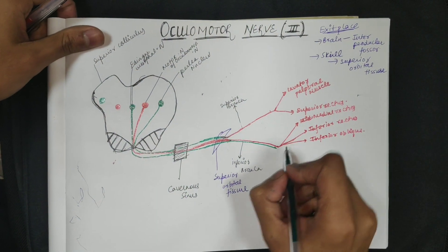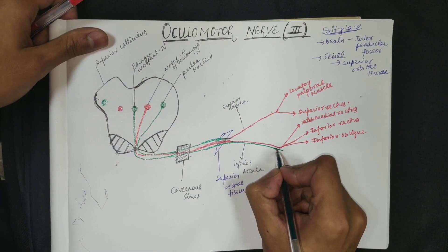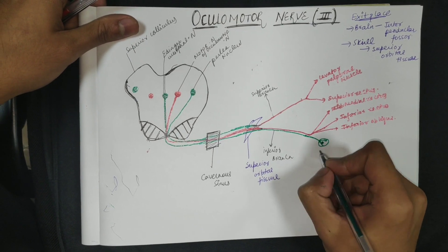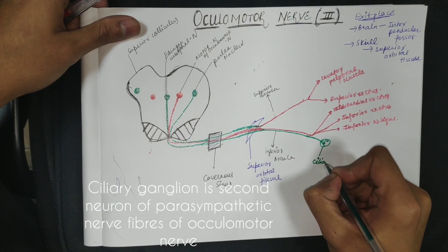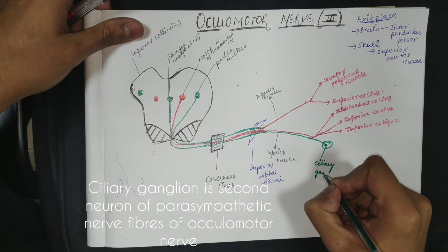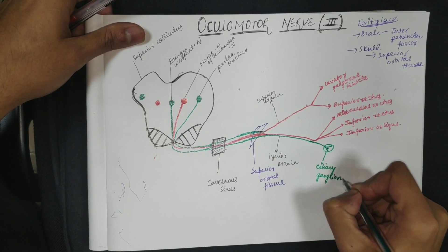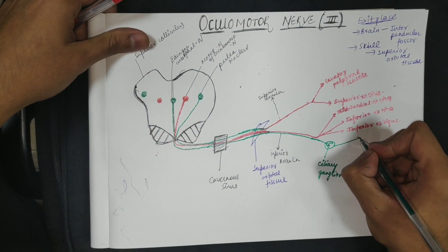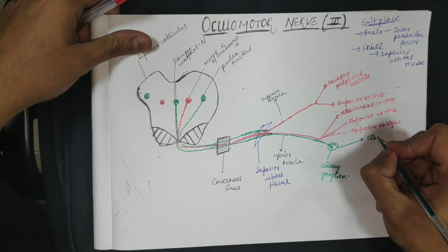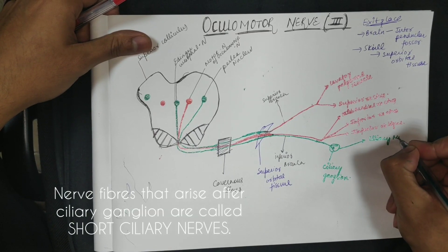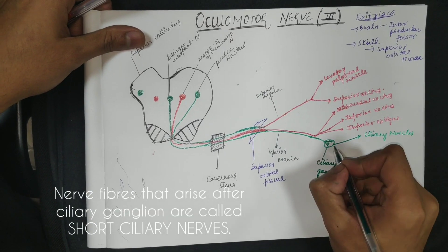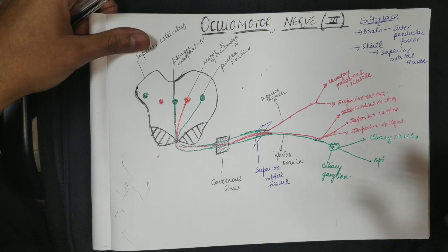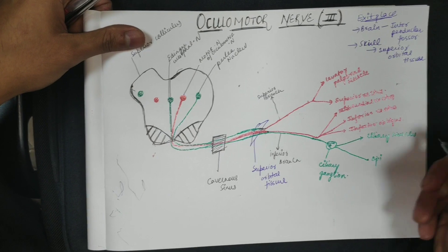The parasympathetic fibers form a ganglion inside the eye called the ciliary ganglion. The ciliary ganglion supplies two intrinsic muscles: the ciliary muscle, which controls accommodation, and the sphincter pupillae muscle, which constricts the pupil.